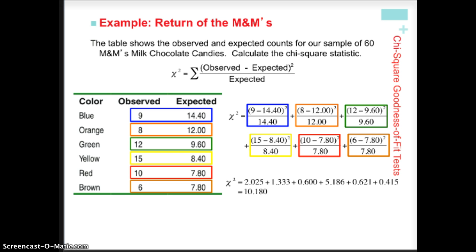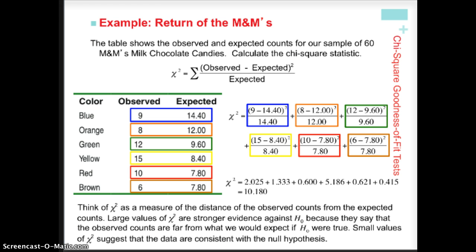As we can see from the final calculation of 10.180, the numbers that contribute to that 10.180 are 2.025, 1.333, etc. And we can see there's one that really jumps out at us, and it's the fourth one and the one that goes along with the yellow. So yellow is the one that really had the biggest contribution to the value of the chi-square test statistic, because it's over half. So pause the video now so you can read the slide and take notes on it, and then turn the video back on when you are ready to resume.